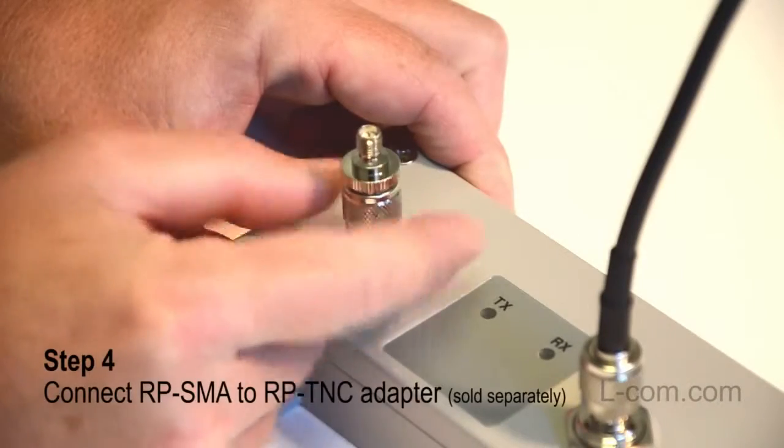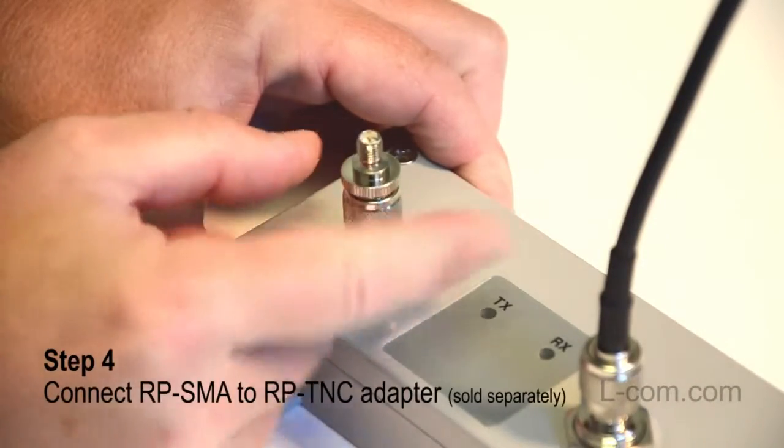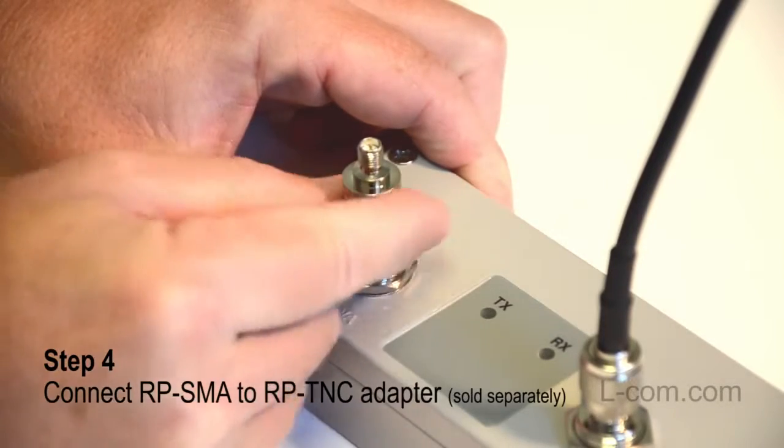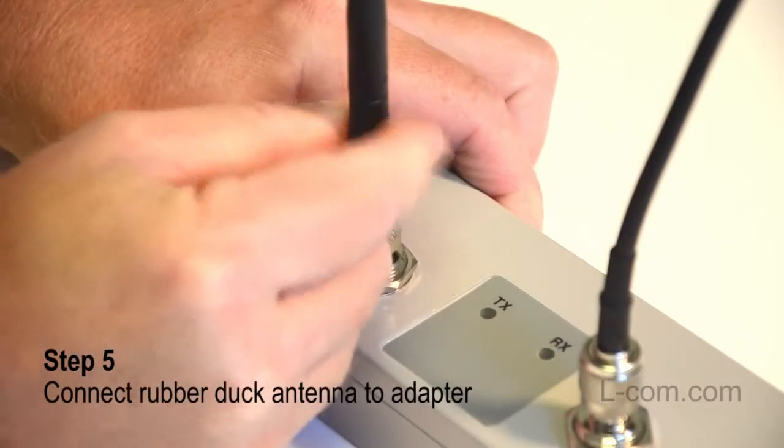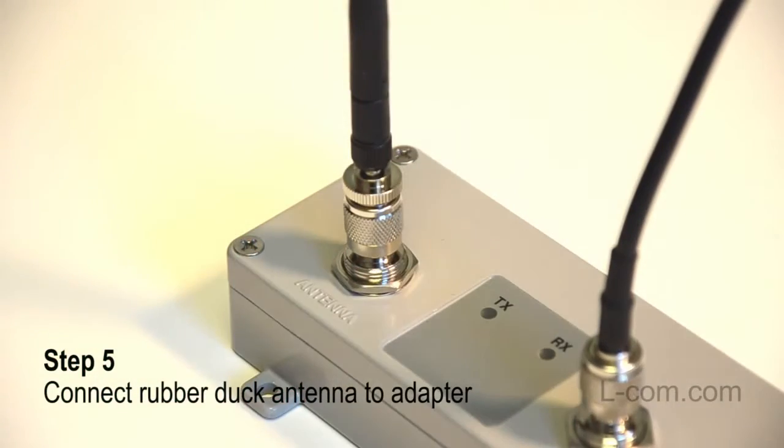Now connect a reverse polarity SMA to reverse polarity TNC coax adapter to the Wi-Fi booster port marked antenna. Connect the supplied rubber duck antenna to the coax adapter.